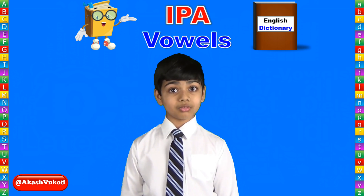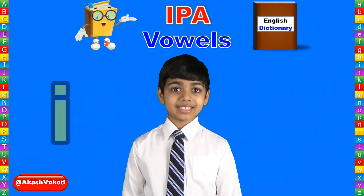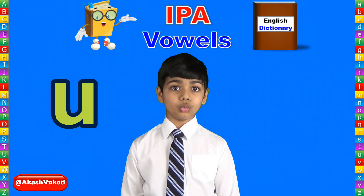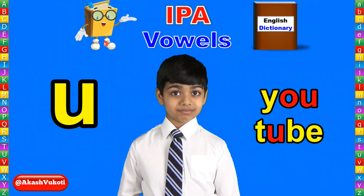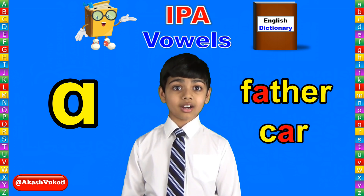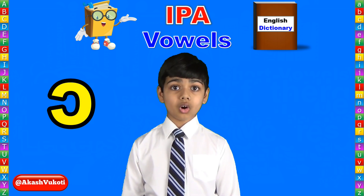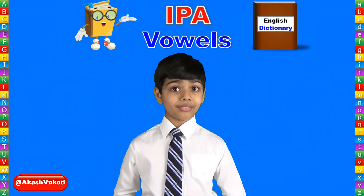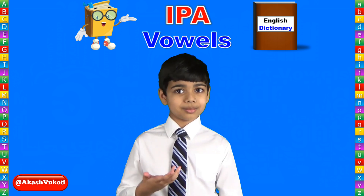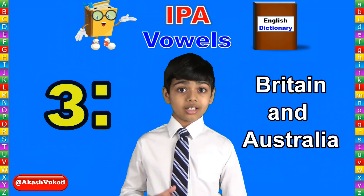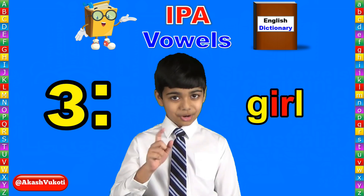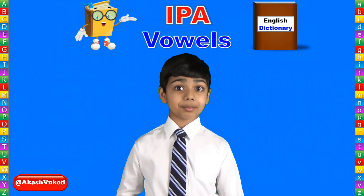Now, let's move on to long vowels. These include: 'ee' as in evening; 'o'; 'u' as in tube, YouTube; 'a' as in father, car; and finally 'o' as in taught. And that's all the long vowels — only four. By the way, there is an extra one used mostly in Britain and Australia. I don't really have a good British accent, so I'll try my best. Let's recap the long vowels.